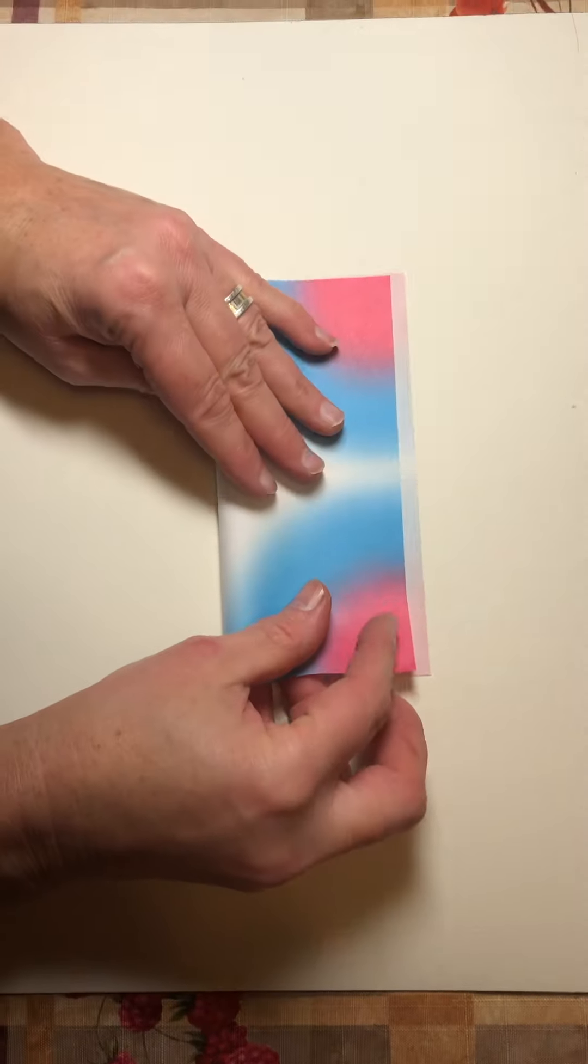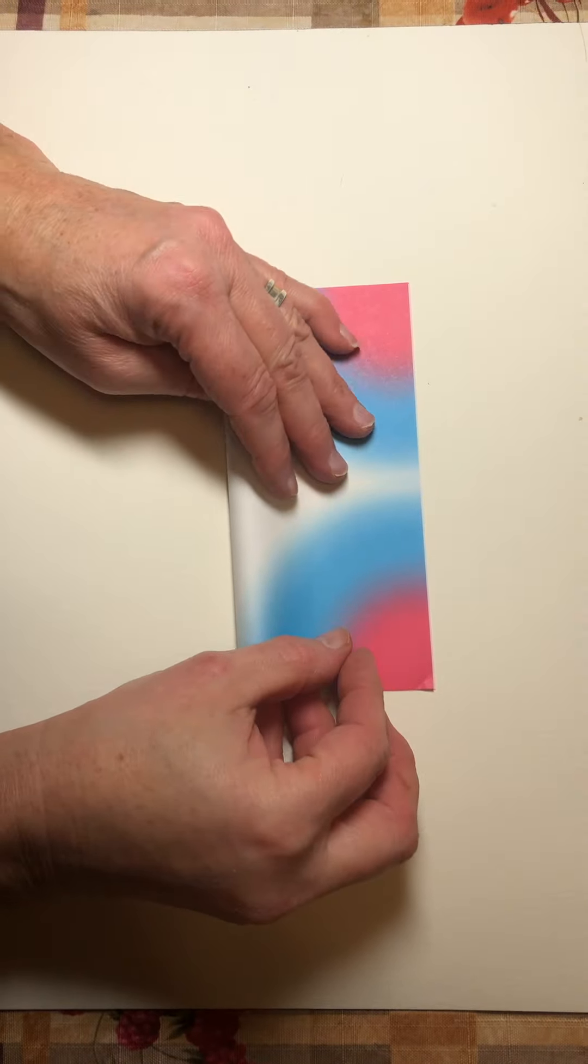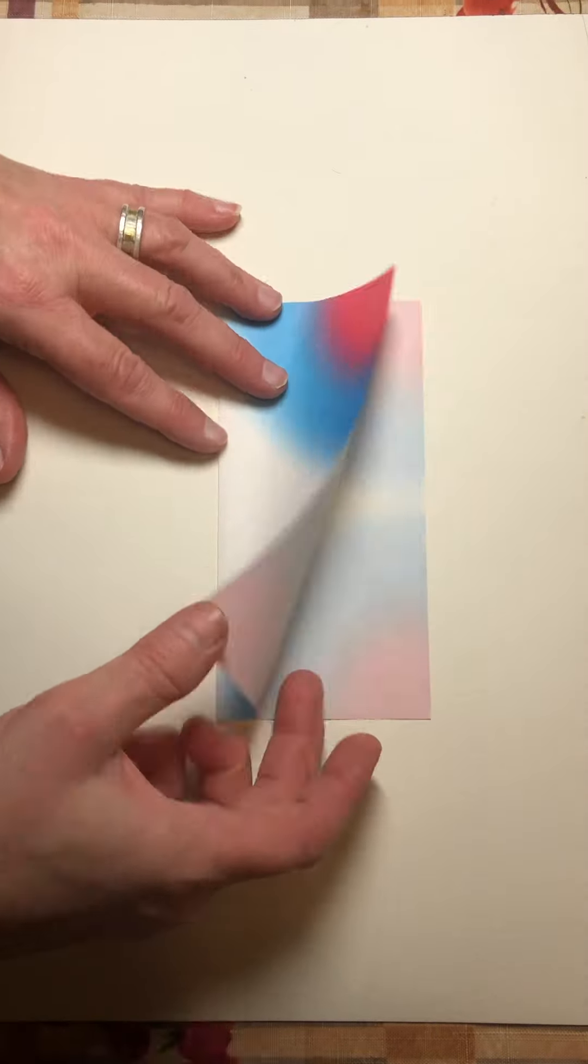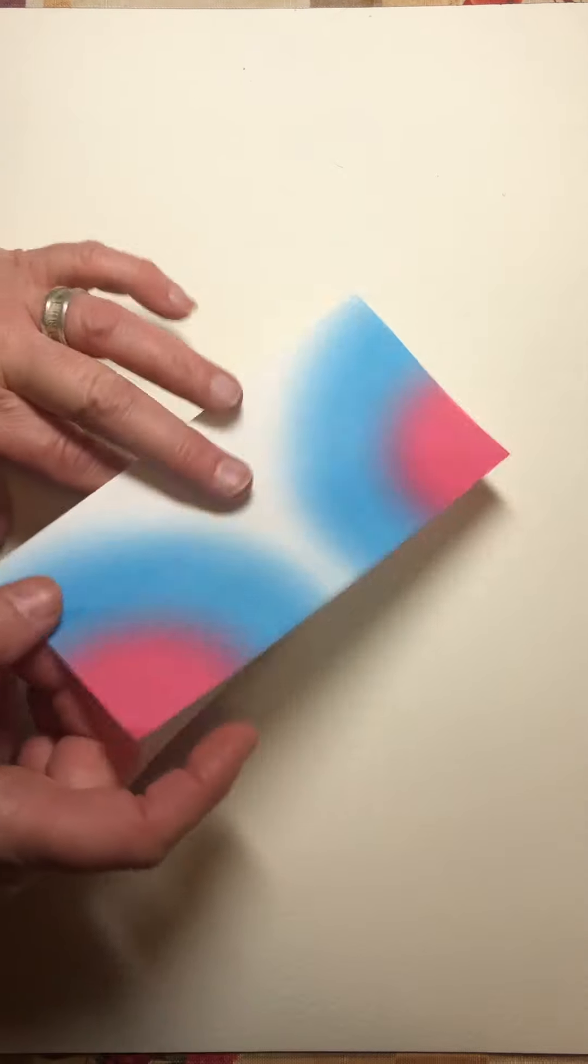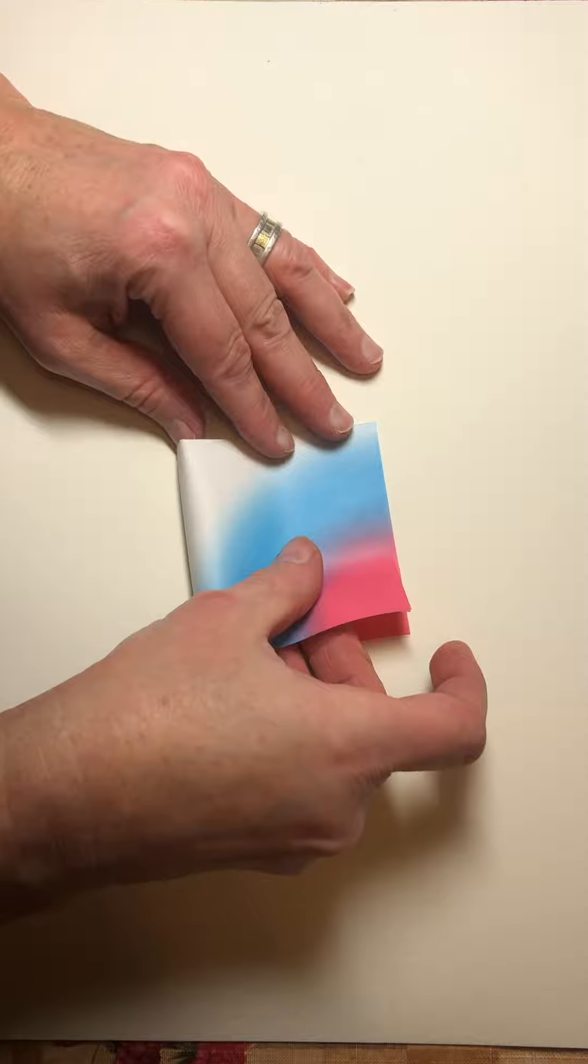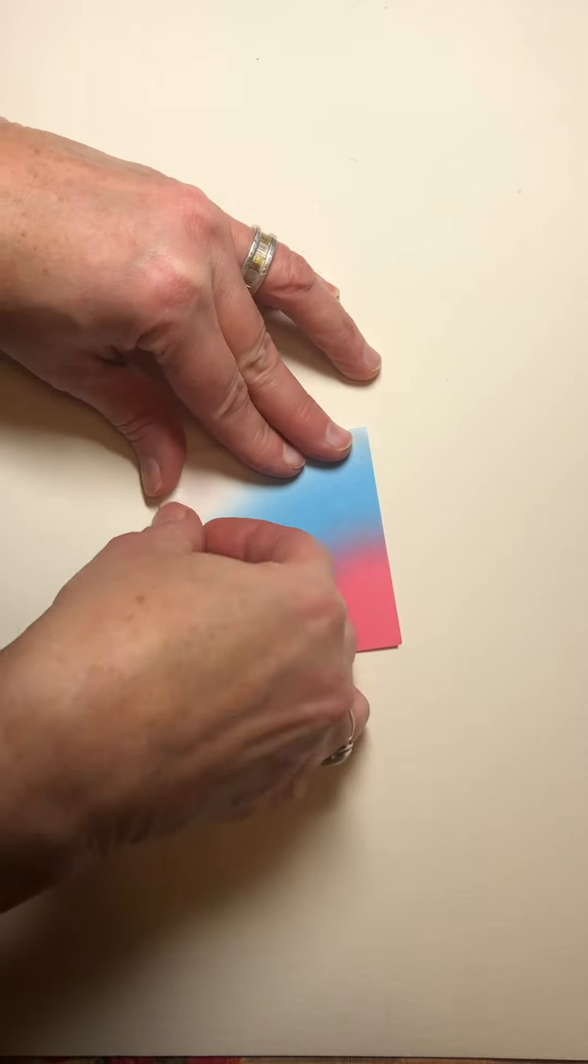So the first thing you do is we always start by folding our paper in half to make a hotdog fold, really nice and crisp along that line, and then in half right there to make a tiny square.